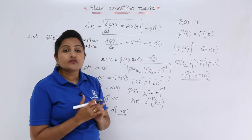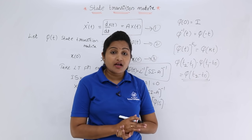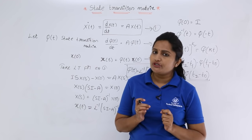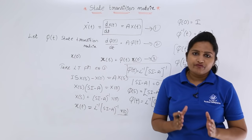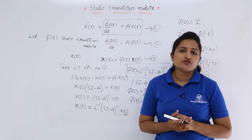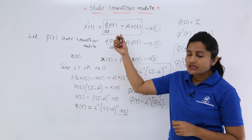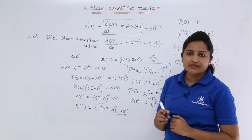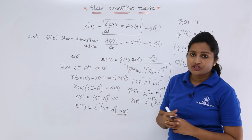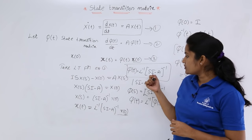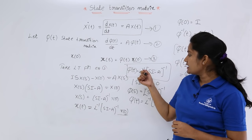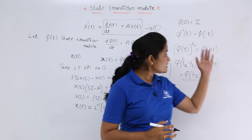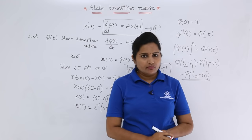This is a very important topic with many exam problems. The key thing to keep in mind is that the state transition matrix is the matrix which satisfies the linear homogeneous state equation. Based on that, we derive phi(t) = L⁻¹{(sI − A)⁻¹}, and the properties listed above all follow from this definition.